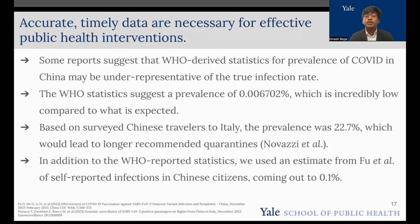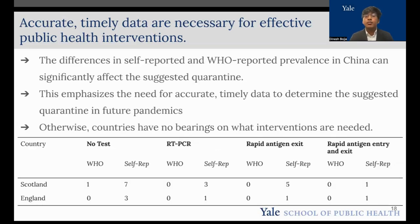Above all, this model represents the importance of finding accurate and timely data for effective public health interventions. We opted to look at different statistics of Chinese prevalence because some reports suggested that WHO-derived statistics aren't necessarily the best. The World Health Organization statistics suggest a prevalence of 0.0067%, while other measures, like the prevalence of infection within Chinese travelers' planes to Italy, was about 22.7%, which would mean longer recommended quarantines. We opted for a middle ground, looking at an estimate from Fu et al., which looked at self-reported infections in Chinese citizens at about 0.1%. The differences in self-reported and World Health Organization prevalence in China would significantly change the suggested quarantine, as these entries from the table suggest.